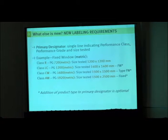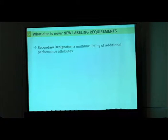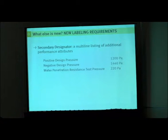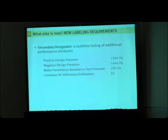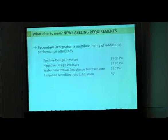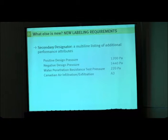Your secondary designator has positive and negative design pressure, water penetration resistance test pressure, and Canadian air infiltration/exfiltration rating. The Canadian air tightness ratings under NAFs are more stringent than those in the US. You have to reach a higher level of air tightness to give a product one of the Canadian infiltration/exfiltration ratings. The secondary designator was designed to capture the additional things needed for Canadian code compliance.